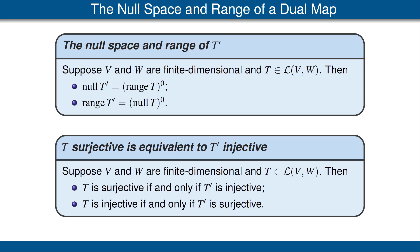Let's talk through the proof of part of this result. Suppose that T is surjective — that means the range of T is all of W, which means the annihilator of the range of T is just 0. From the theorem above, the range of T having 0 as its annihilator says that the null space of T prime is 0, which means T prime is injective. In other words, we have proved that if T is surjective, then T prime is injective. The proof of the other parts of this theorem are quite similar.